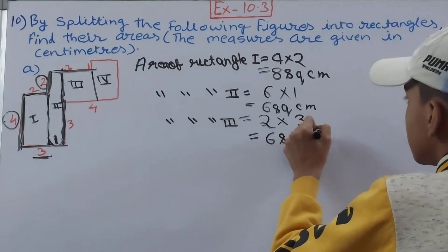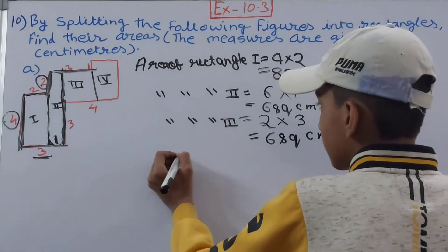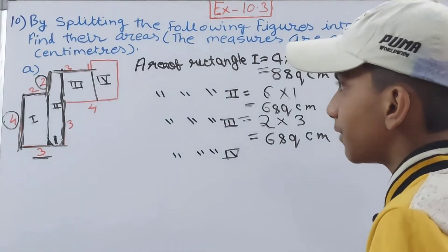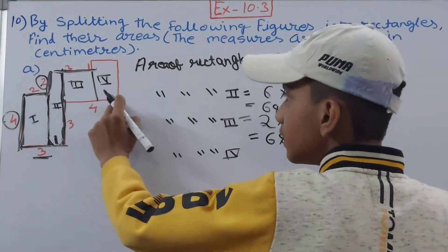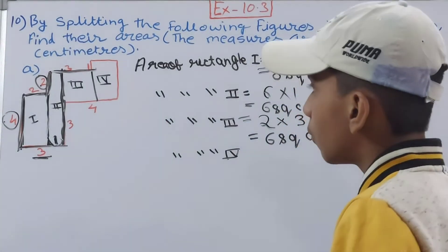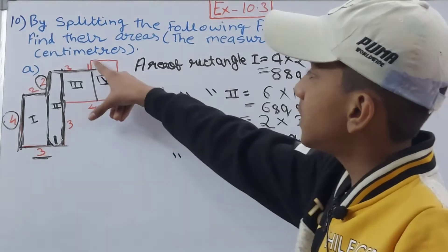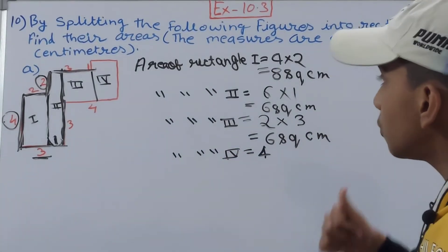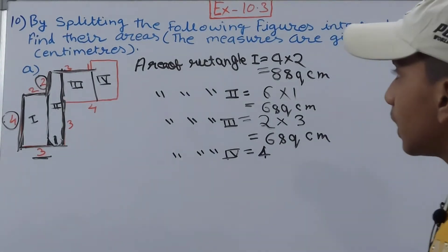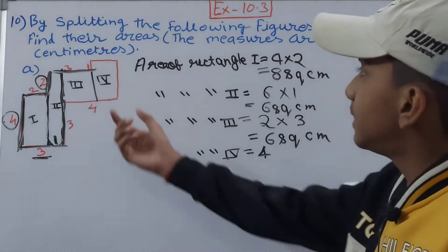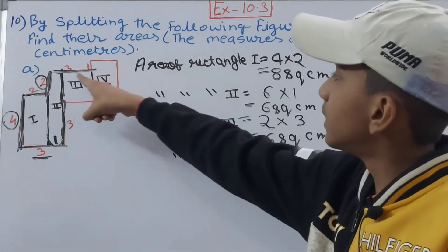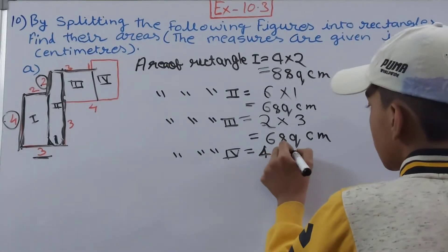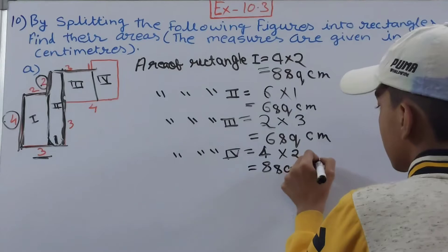For the last, Rectangle 4: none of the dimensions are directly given so we have to find them. The breadth is 4 cm. For the length: 3 + 1 = 4 cm. For the breadth: 4 − 2 = 2 cm. So area of Rectangle 4 = 4 × 2 = 8 square centimeters.